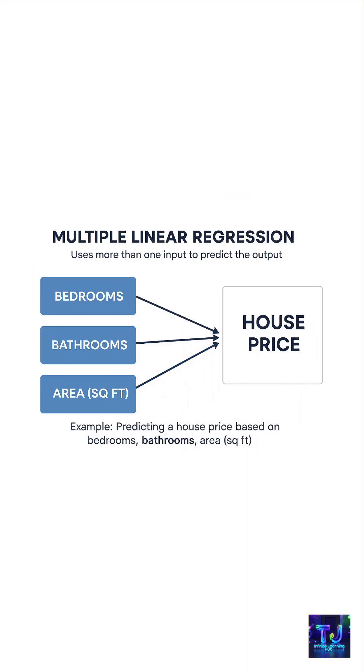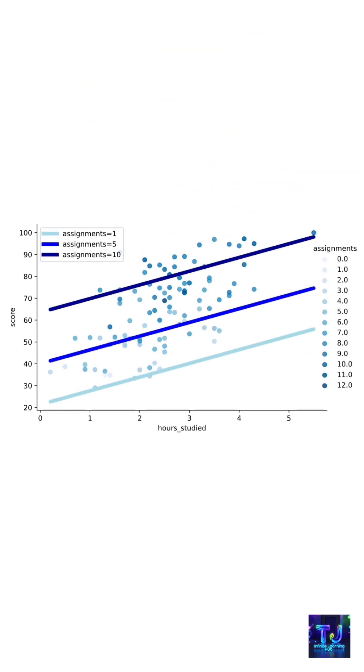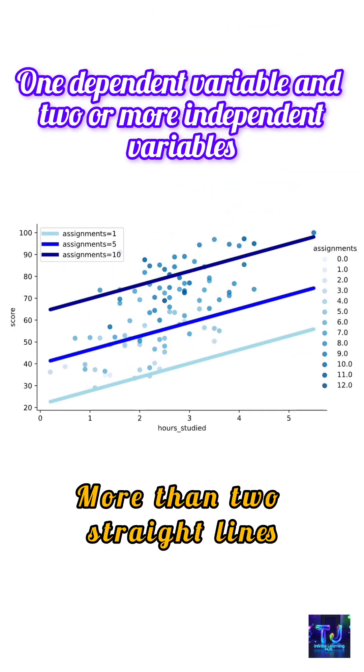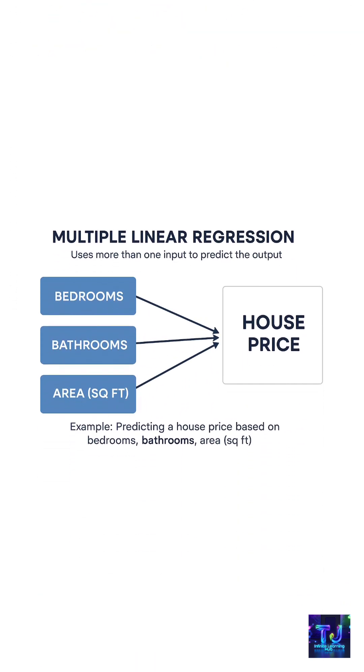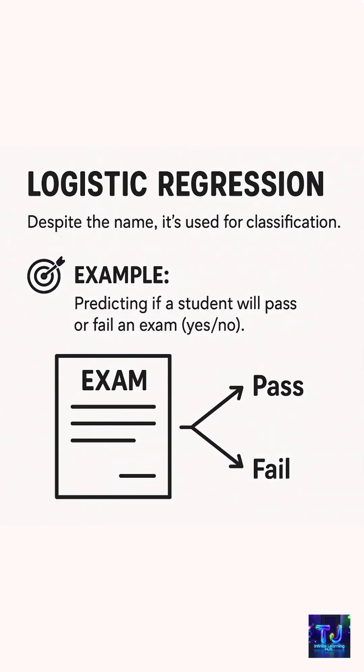Next type is multiple linear regression, which is advancement of linear regression. Here we will have only one dependent variable and two or more independent variables. Example: predicting a house price based on bedroom, bathroom, and square feet area.